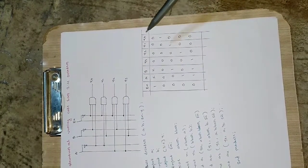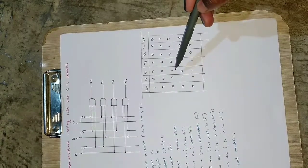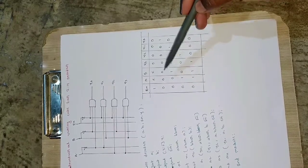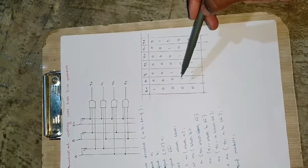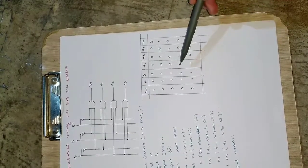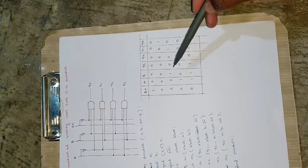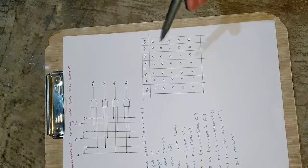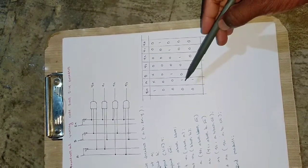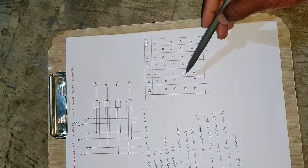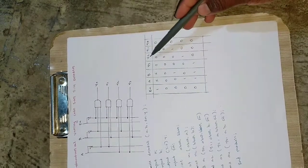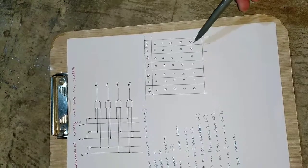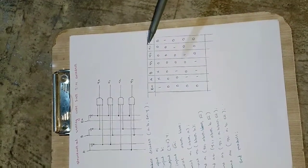Enable is low for all operations: Y3, Y2, Y1, and Y0. When A=0, B=1, Y1 will be high. The decimal equivalent of 00 is 0, 01 is 1, 10 is 2, and 11 is 3. So for 01, Y1 is high (output: 0,0,1,0). If A=1, B=0, that is binary for 2, so Y2 will be high. If A=1, B=1, that is binary for 3, so Y3 will be high and others will be 0.